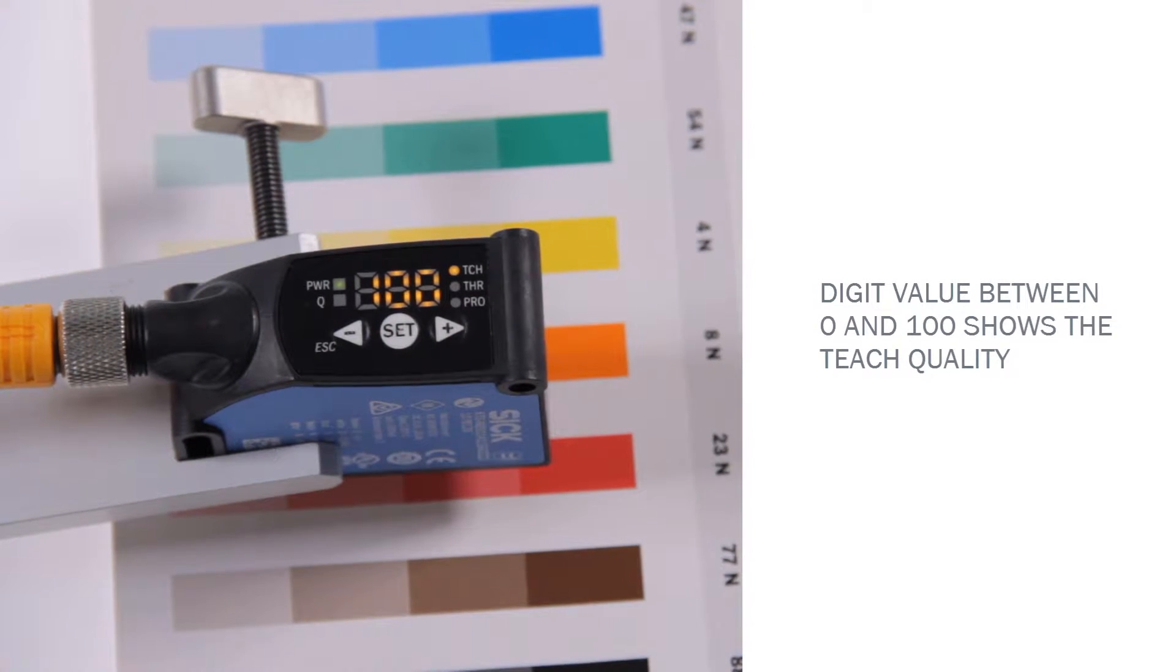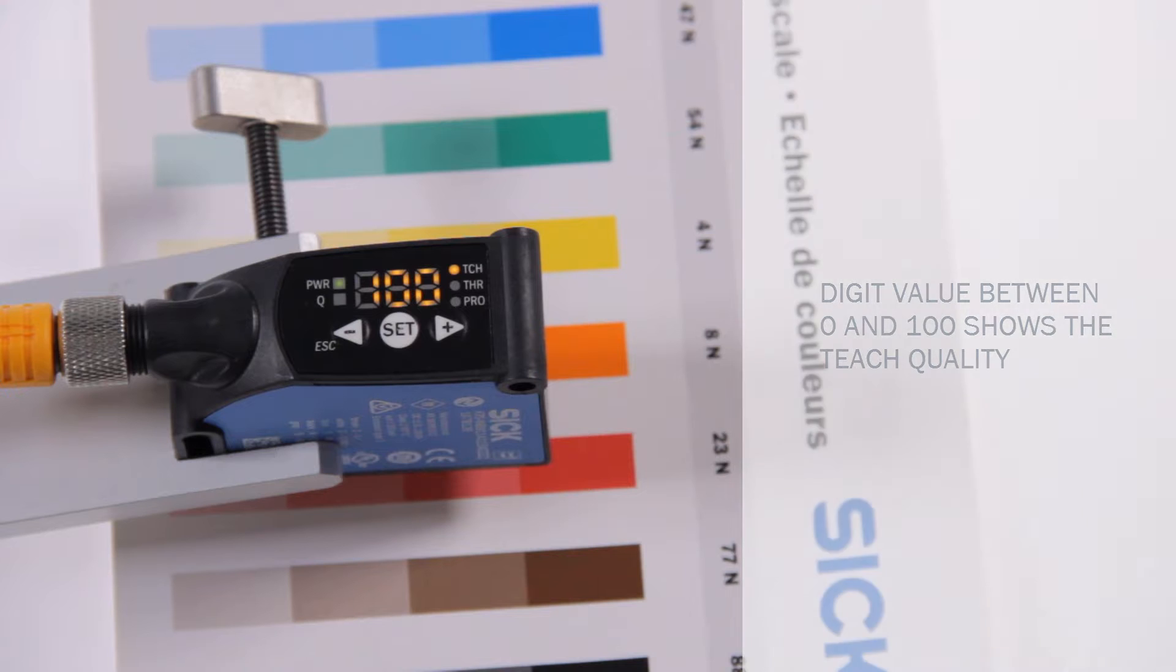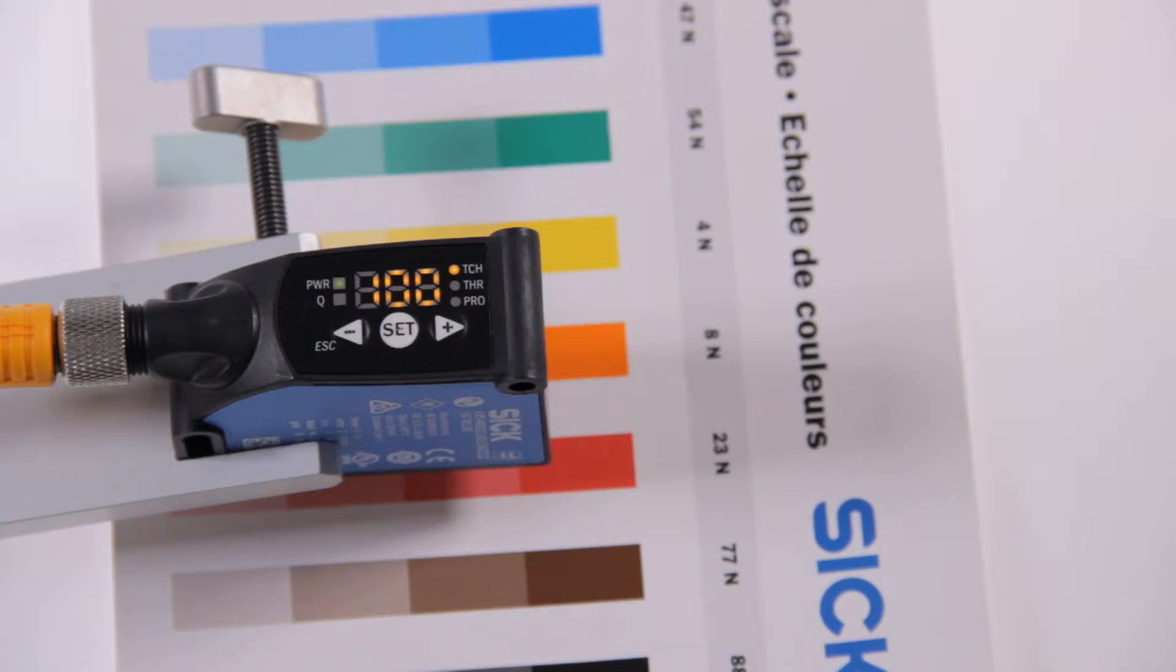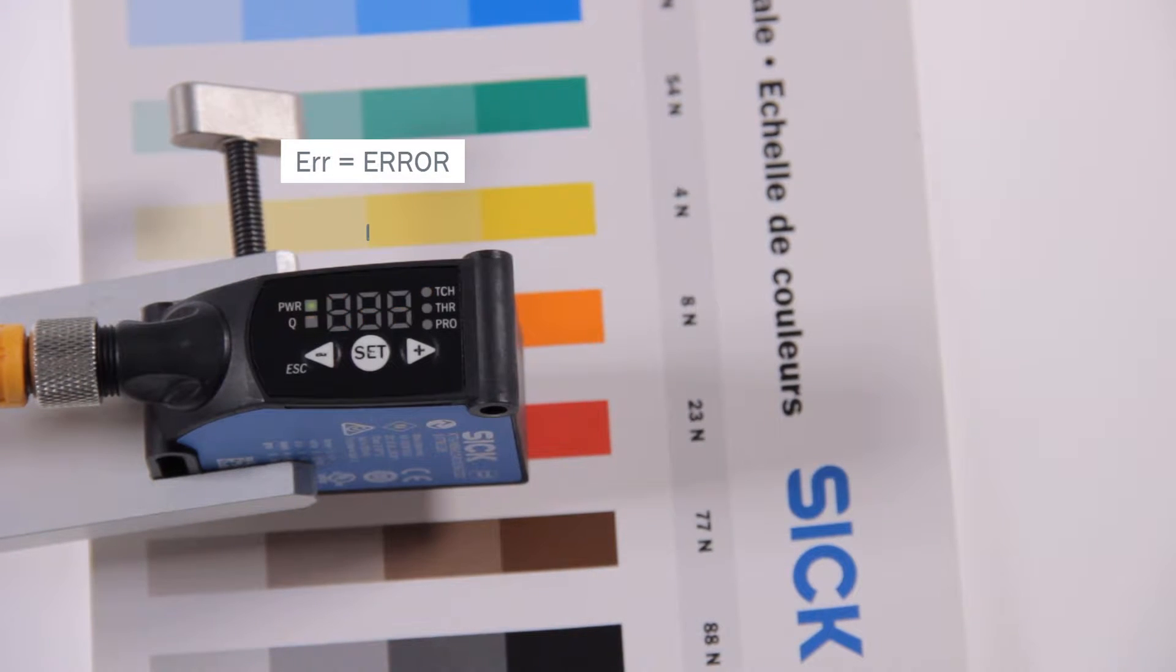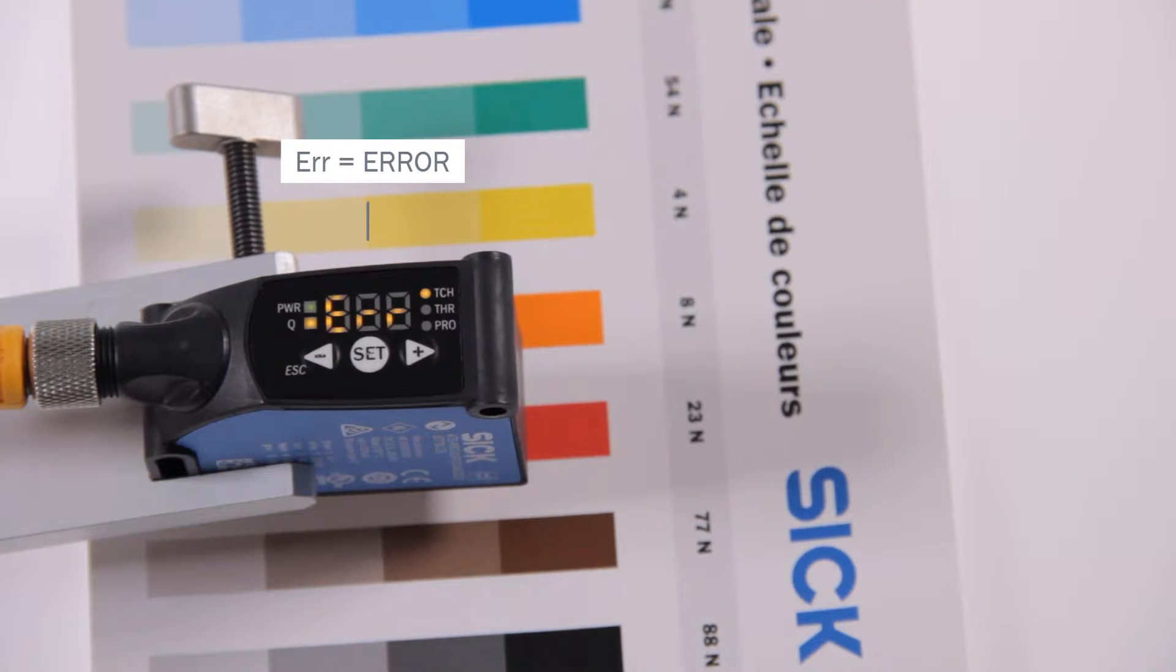A digit value between 0 and 100 shows the quality of teach. The higher the number, the better the quality. If ERR for error is displayed, a fault the teach is indicated and the teach-in needs to be redone.